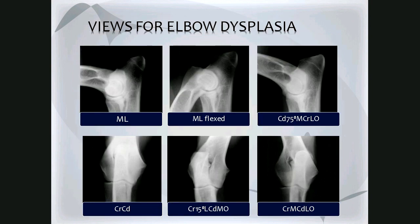Several radiographic views help assess the elbow in cases of elbow dysplasia. From a DIM 400 perspective, the most practically applicable views in private practice are the first four. The medial lateral and cranial caudal views are the standard orthogonal views of the elbow. These are good for obvious lesions and detecting arthrosis, but often additional views are needed to determine the exact cause.